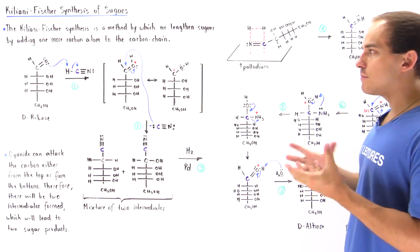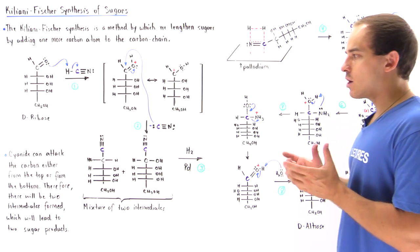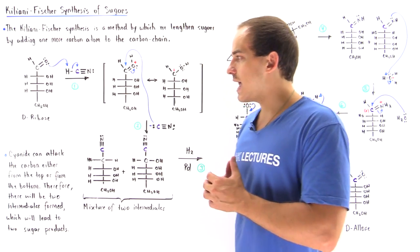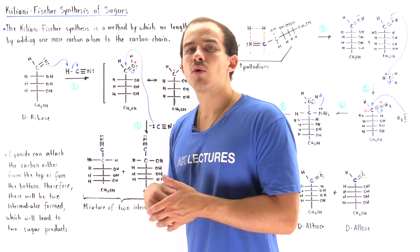To actually examine what the reaction is and how it works, let's take a look at a specific type of sugar molecule. Let's say an aldopentose, our D-ribose.